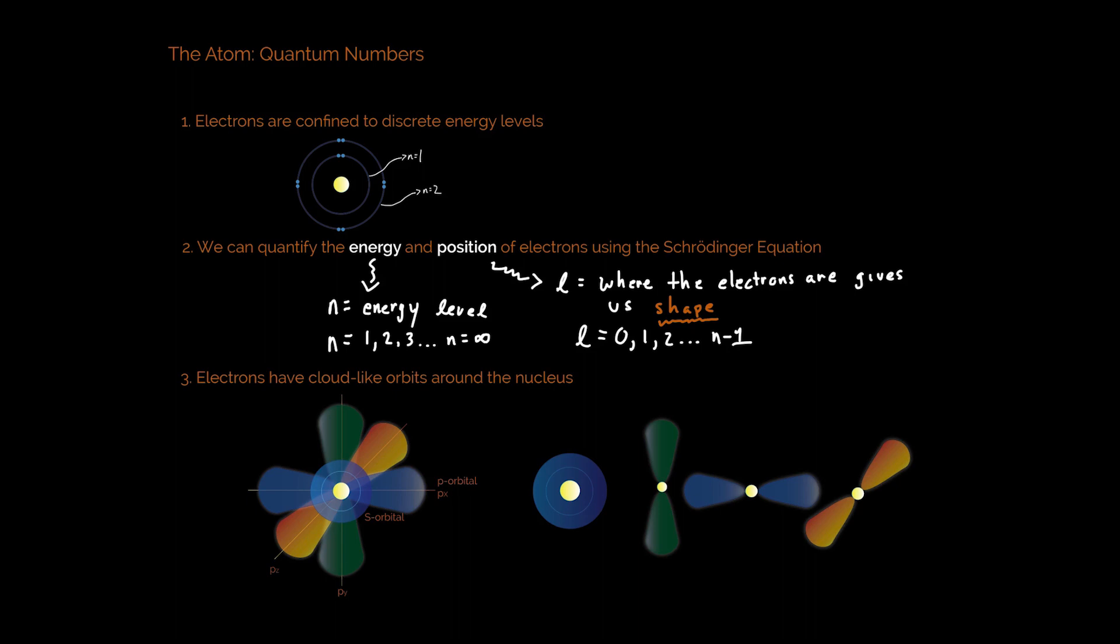But then we move on to point two, and that is that we can quantify the energy and position of electrons using the very famous Schrödinger equation. So we give energy its own term, and we call that n, or what we'll talk about later as the principal quantum number. And that's simply energy level. It's any whole number integer up until infinity.